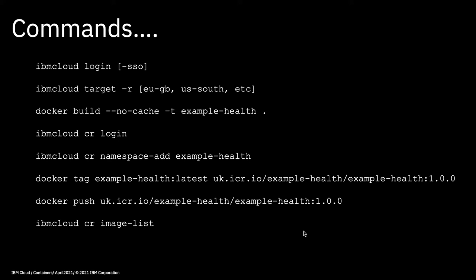Next, I'm going to rebuild my Docker container using the docker build command. I'm then going to log into my container repository using the IBM Cloud CLI login command. We're then going to add a namespace to the container registry using the namespace add command, tag the Docker container, push the container up to the container registry, and list the images just to make sure it's all up there.